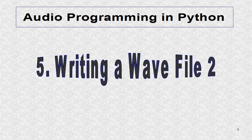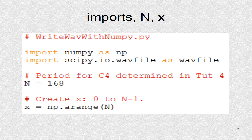NumPy and SciPy modules will be used to create an audio wave file. First, numpy is imported as np and scipy.io.wavefile as wavefile. Then an integer variable n is created and initialized to 168. Finally, the numpy function arange is used to create an input array called x, which is an array from 0 to 167. This function is very similar to the standard Python function range.